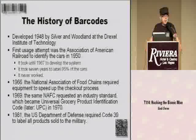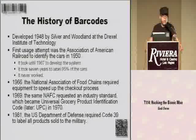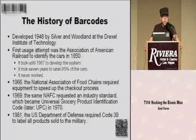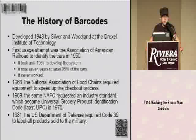However, in 1966, the National Association of Food Chains started to require having barcodes on products to speed up the checkout process so they could make more money. And that usually tends to be a really good driver for technology — either making more money or porn. So, in 1969, they requested an industry standard, which later became the UPC code that you all have on your grocery products here in the States.